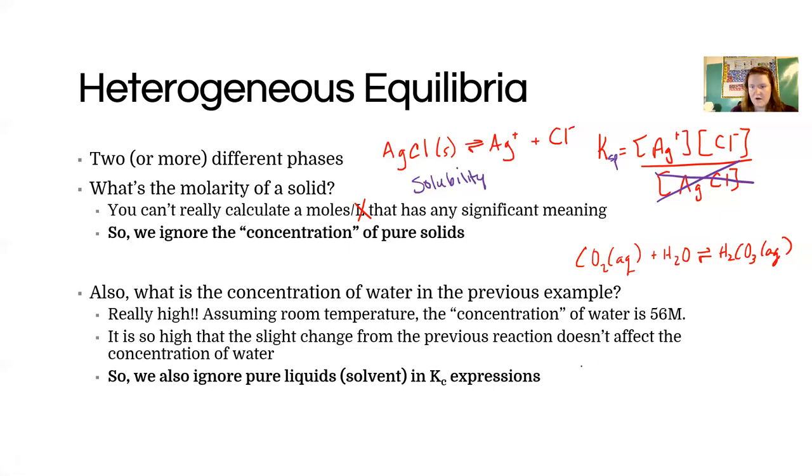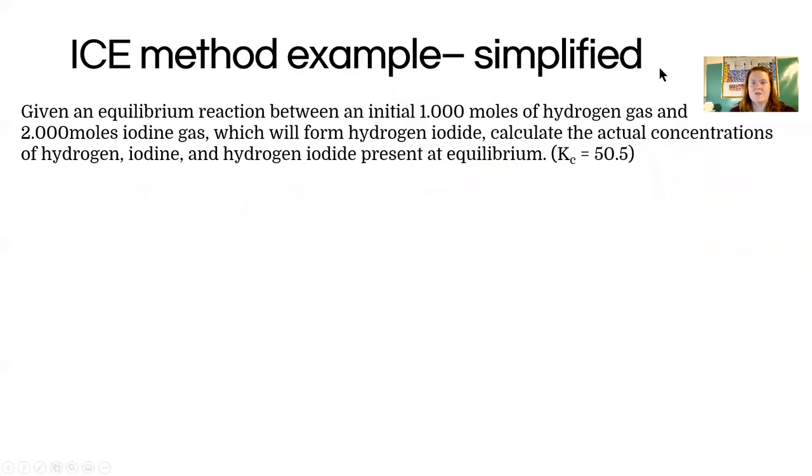So similarly, our Ks are going to be ignoring anything that is a pure liquid. So in that case, water. And so for this one, we end up with just products over the reactants that aren't the solvent like that. So those numbers I showed you are ignoring water because water is such a high, high concentration. That's how we treat heterogeneous equilibriums.